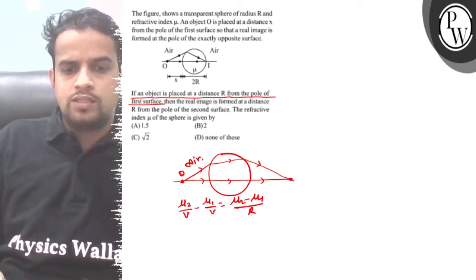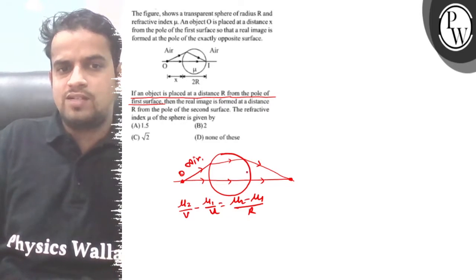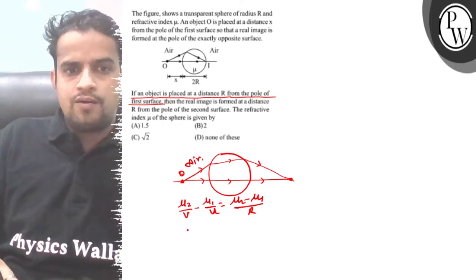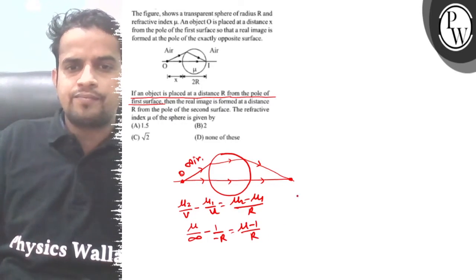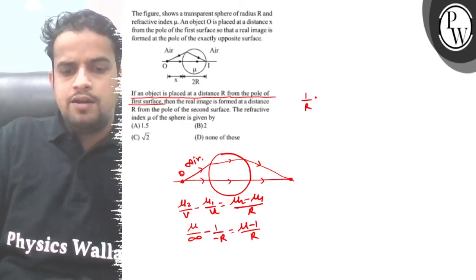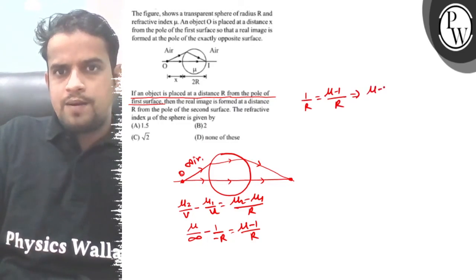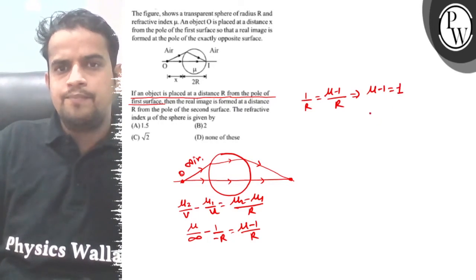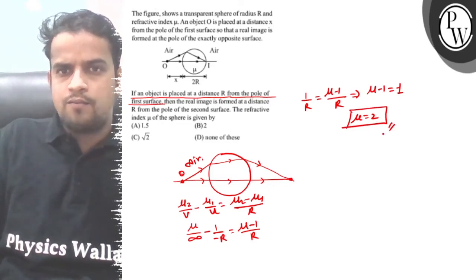Now we work on the second surface. You can write 1 upon r equals to mu minus 1 upon r. Mu1 is equal to 1. When you solve this, you will find mu equals how much? The refractive index is 2.